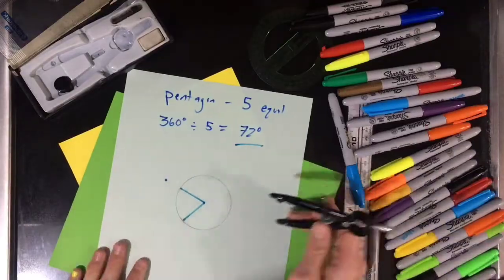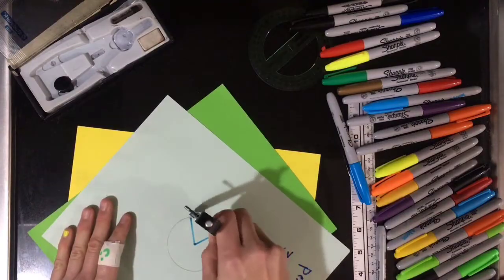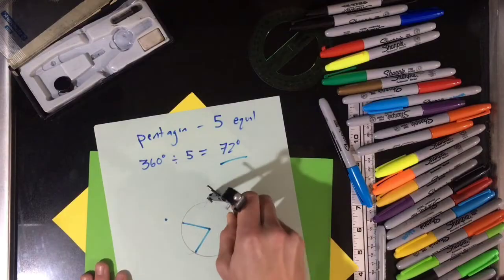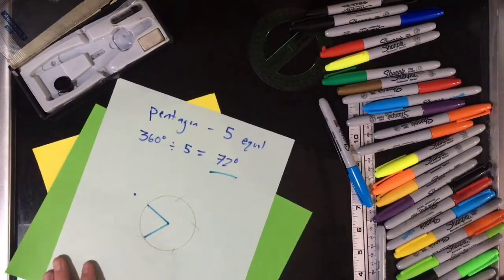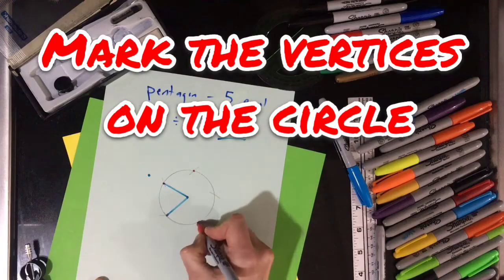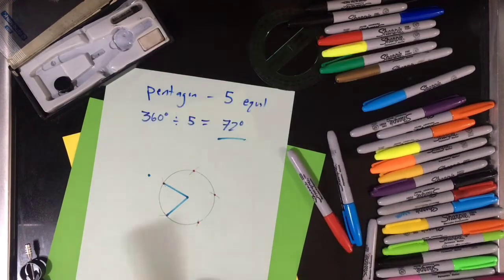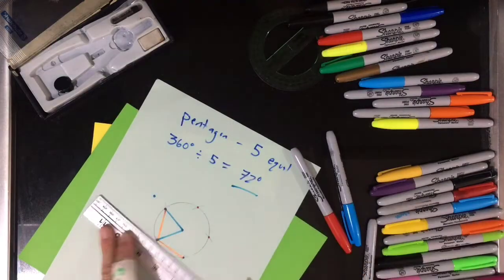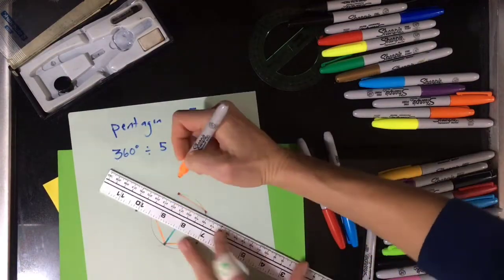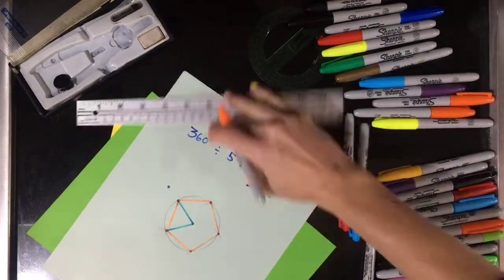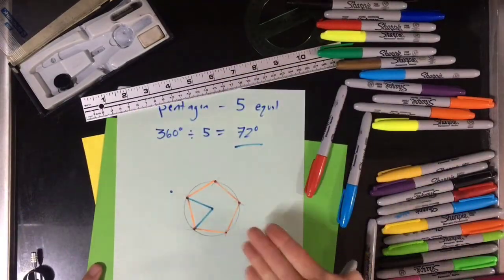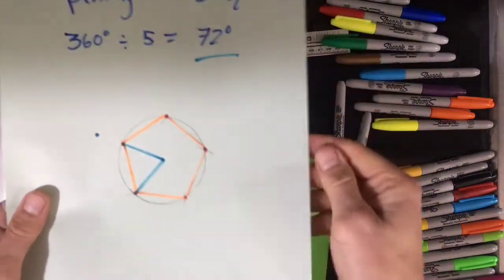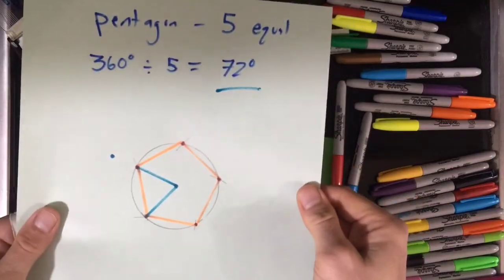Then you're going to draw marks around your circle. And there, a beautiful regular pentagon.